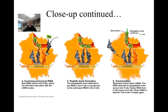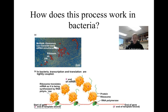This cycle continues until a stop codon is reached and translation ends. In bacteria, this process is slightly different. Since there is no nucleus and the mRNA doesn't need to be processed, it can be translated immediately once it has been transcribed — in fact, it is actually translated while it is being transcribed. As you can see, more than one copy of the mRNA is made, and more than one ribosome translates each piece.